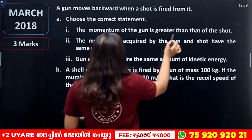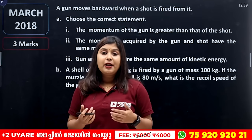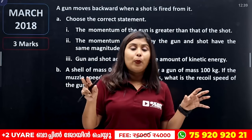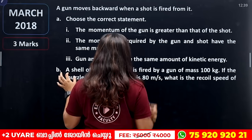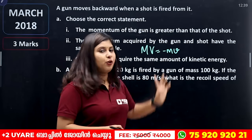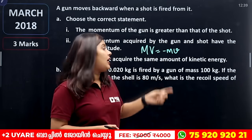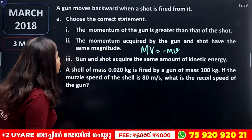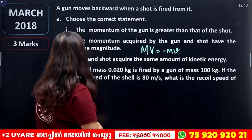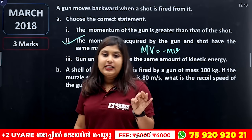Choose the correct answer: The momentum of the gun is greater than that of the shot? No — the recoil velocity equation shows that V equals minus small m times v divided by M. The momentum of the gun is equal to that of the bullet but in the opposite direction. So the magnitude is equal and the direction is different. Option 2 is correct.